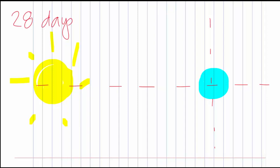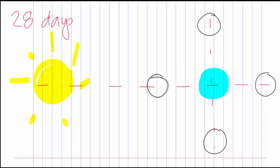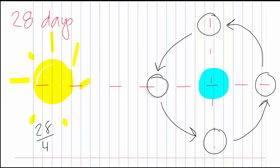We're going to draw the four main moon phases — there are four moon phases that happen on one day each. So I draw one right here, one right here, one right here, and one right here. Those are the four main moon phases. The moon is going to go around the Earth counterclockwise. Since it takes 28 days to go all the way around, and 28 divided by 4 is 7, each one of those moon phases happens every seven days.